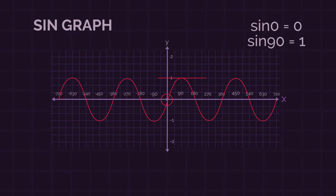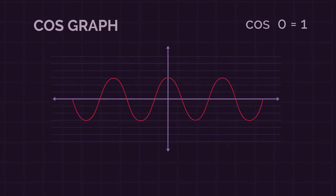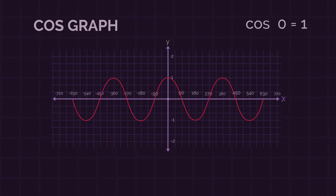And sine 90 equals 1, so the curve is at 1 here. Type cos 0 into your calculator, and you get 1. So that should help you remember that the cosine graph crosses the y-axis at 1. And cos 90 equals 0, so the curve is at 0 here.